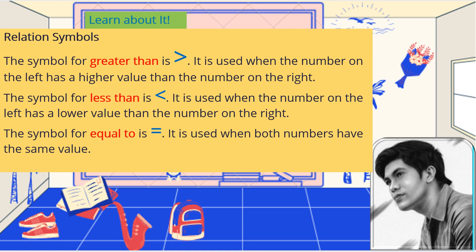Another is the symbol for less than. It is used when the number on the left has a lower value than the number on the right. The symbol faces away from the left — if your left hand holds fewer objects, lighter compared to your right hand, that's the symbol for less than.